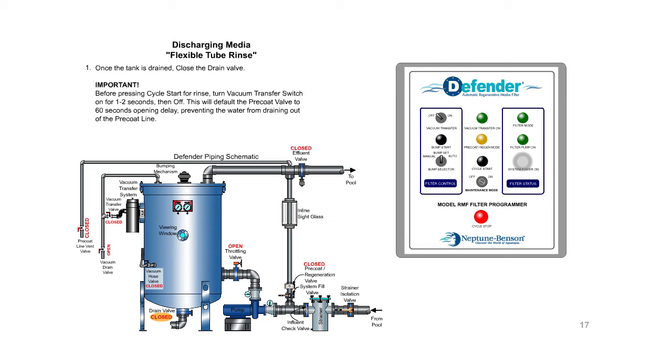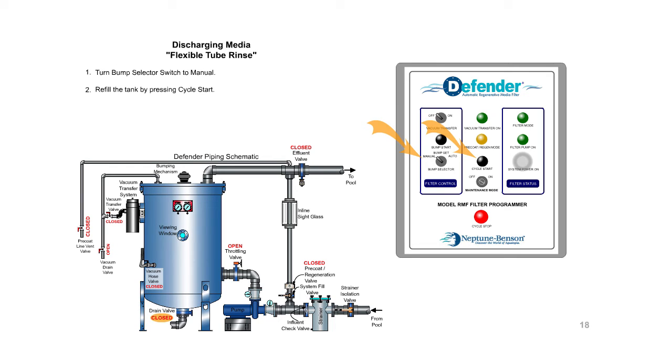Flexible tube rinse. Once the tank is drained, close the drain valve. Before pressing cycle start for rinse, turn vacuum transfer switch on for 1 to 2 seconds, then off. This will default to the pre-coat valve to 60 seconds opening delay, preventing the water from draining out of the pre-coat line. Turn bump selector switch to manual. Refill the tank by pressing cycle start.